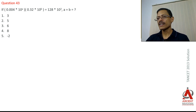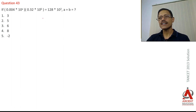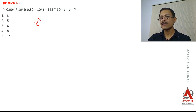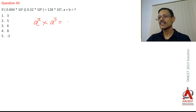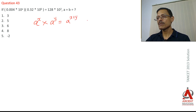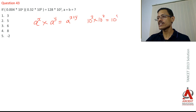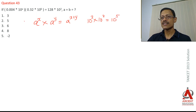I would like to walk you through some rules of indices. Rule number 1: a^x × a^y = a^(x+y). For example, 10² × 10³ = 10^(2+3) = 10^5. This is rule number 1 of indices.